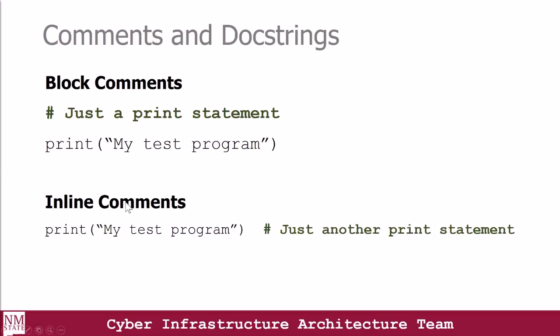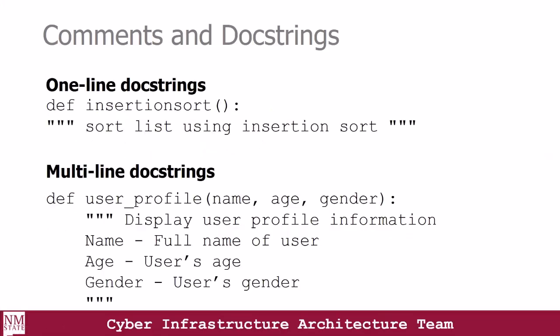Inline comments are placed on the same line as the statement. We also have what we call doc strings. The difference between a doc string and a comment is that a comment helps the developer understand the function of different sections of code when it is revisited at a later time — for example, five years from now, what does it actually do? Doc strings provide a detailed description about a given function, class, or module. The description is returned by Python when you run the help command.